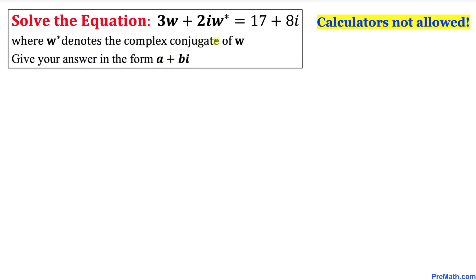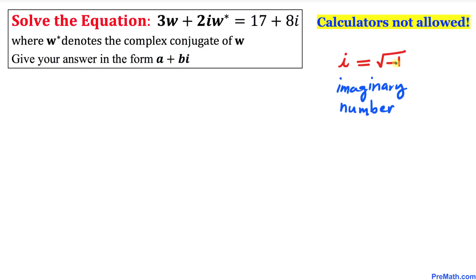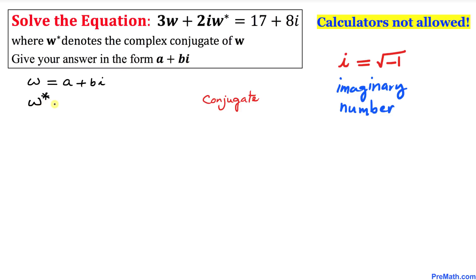Before we go any further, let's talk about i. i stands for imaginary number, and always remember that i is equal to the square root of negative 1. Here is the very first step: let's talk about the complex number w. We have been told that w is written as a plus bi.